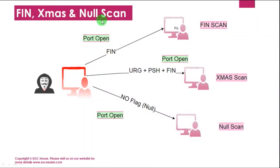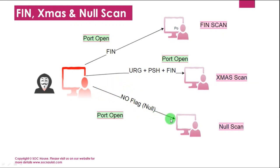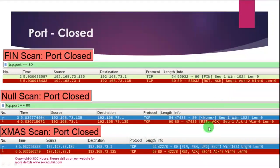FIN, XMS, and null scan are other types of scans used for port scanning. In FIN scan, the attacker sends a packet with the FIN flag only. In XMS scan, the attacker sends a combination of URG, PSH, and FIN flags to the target. In null scan, no flag is set — only a blank packet is sent to the target. If no response is received from the target, the port is open. If a RST+ACK flag is received, the port is closed.